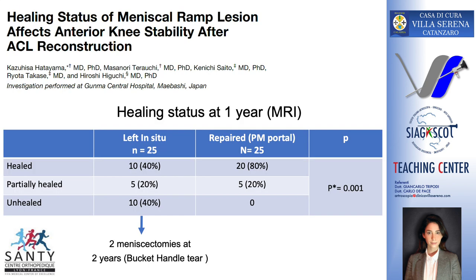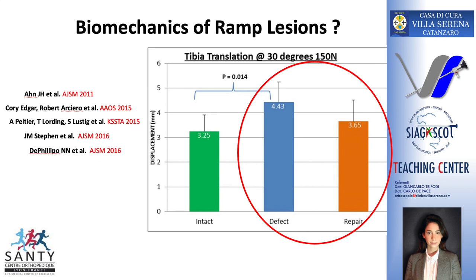Now that we know that they exist, the question is what to do. This study presents the MRI results at one year follow-up from the ACL reconstruction, and 40% of the ramp lesions that were not repaired were not healed. There are a lot of papers about the consequences of a ramp lesion not treated during an ACL reconstruction. This study shows how the ramp lesion can significantly raise the stress on the ACL graft, which can explain some failures in our ACL reconstructions.